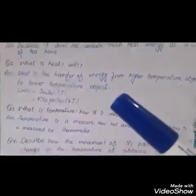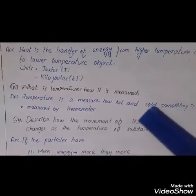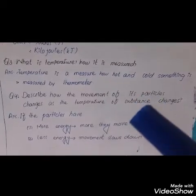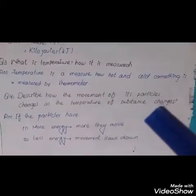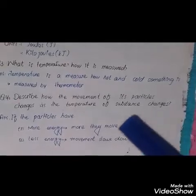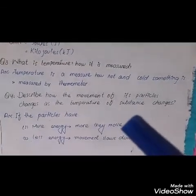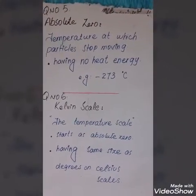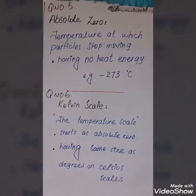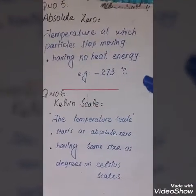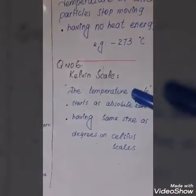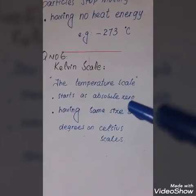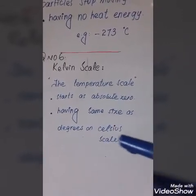Question three: What is temperature and how is it measured? Temperature is how hot or cold something is, measured by a thermometer. Question four: How does particle movement change with temperature? If particles have more energy, they move more. Question five: Absolute zero is the temperature at which particles stop moving with no heat energy — minus 273 degrees Celsius. Question six: The Kelvin scale starts at absolute zero with the same size degrees as the Celsius scale.